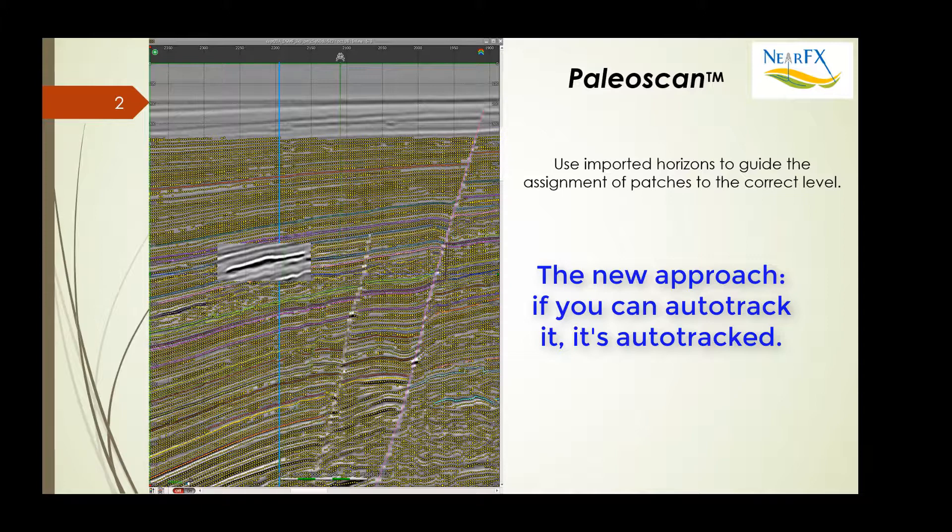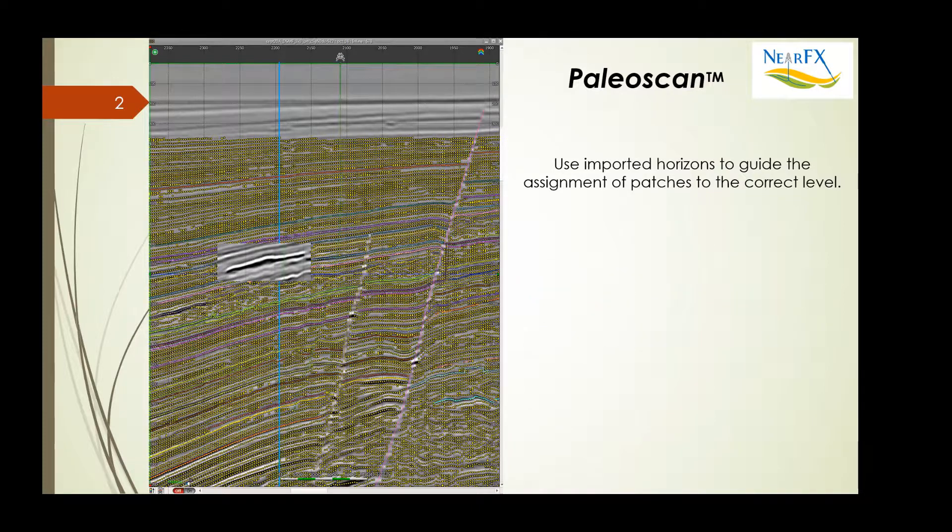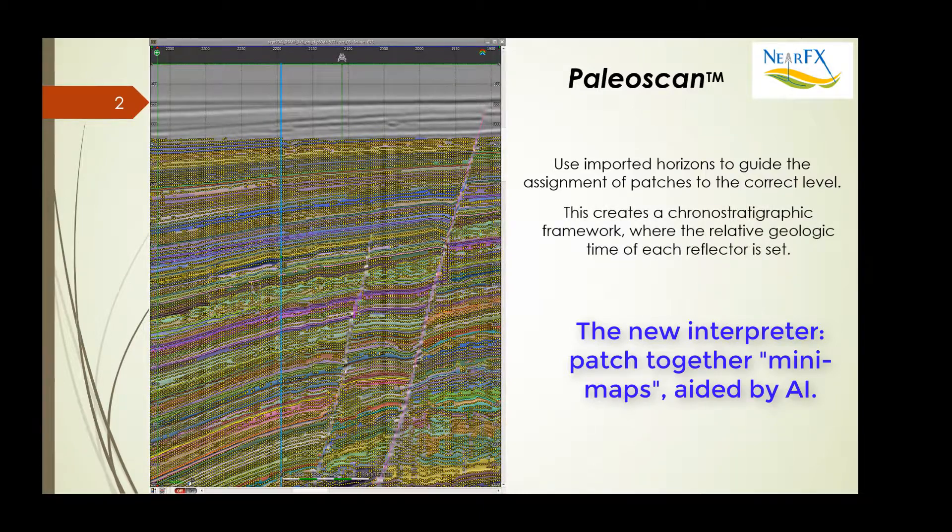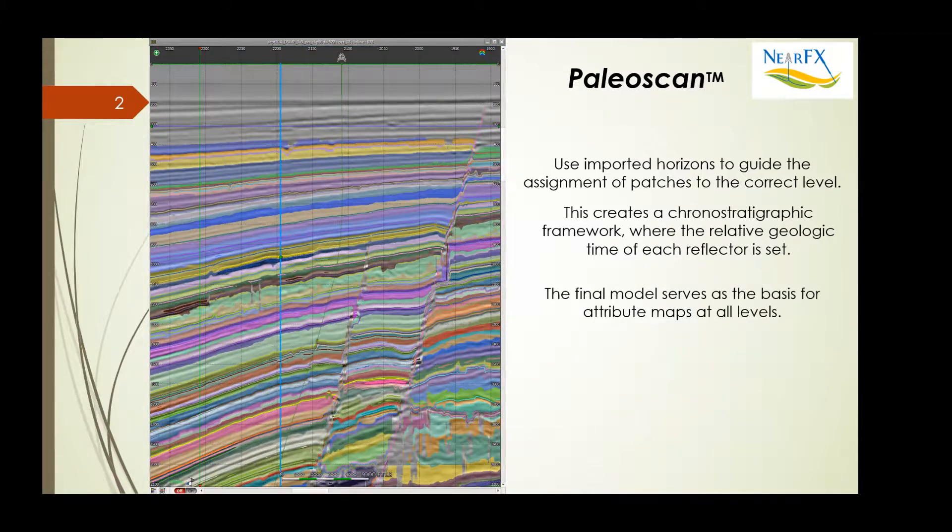With this new approach, what the interpreter is doing is different. Instead of picking horizon by horizon, the job becomes one of jigsaw puzzle, putting patches or mini maps together to create a 3D chronostratigraphic framework where the relative geologic time of each reflector is set.